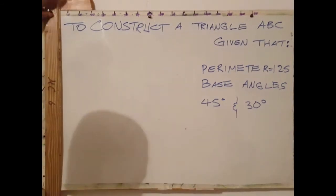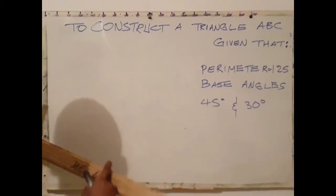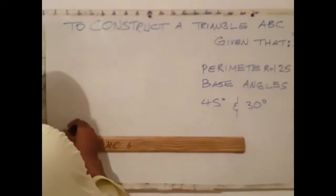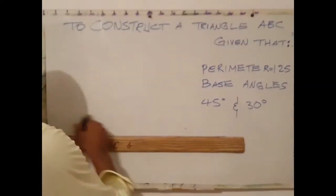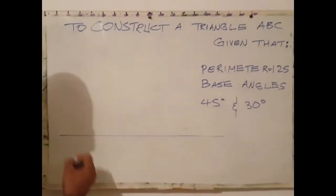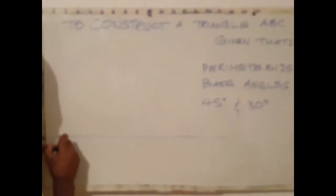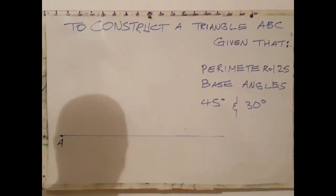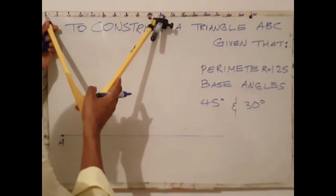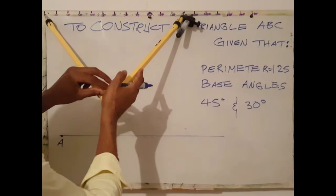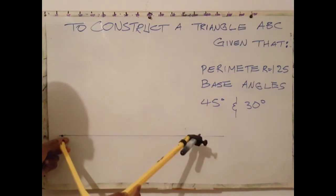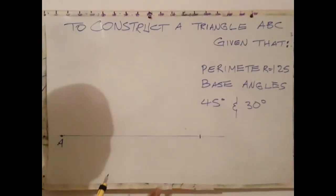To get started, the first thing to do is draw a horizontal line approximately 120mm. I'm going to start with A here. From A to B, label this point B.